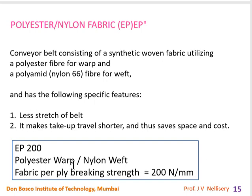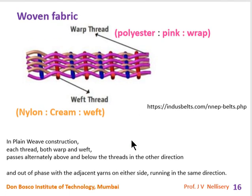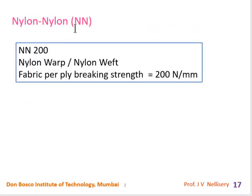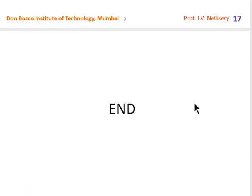For polyester-nylon fabric, EP 200 is used where the warp is polyester and the weft is nylon, with 200 newton per mm as the fabric per-ply breaking strength. In the figure, polyester (warp) is shown in pink and nylon (weft) in cream, woven together. Nylon Nylon (NN) is another belt fabric type where both warp and weft are nylon, also with 200 N/mm per-ply breaking strength.